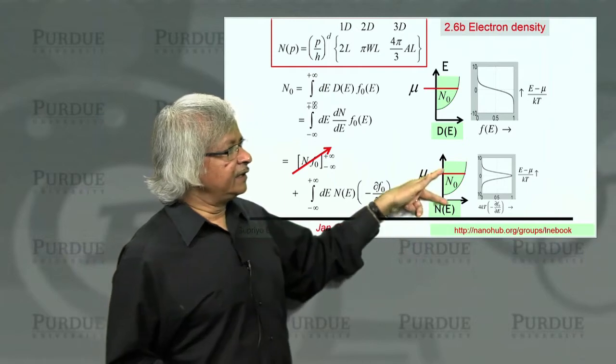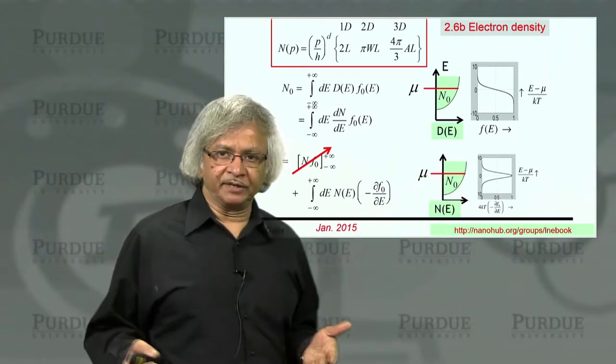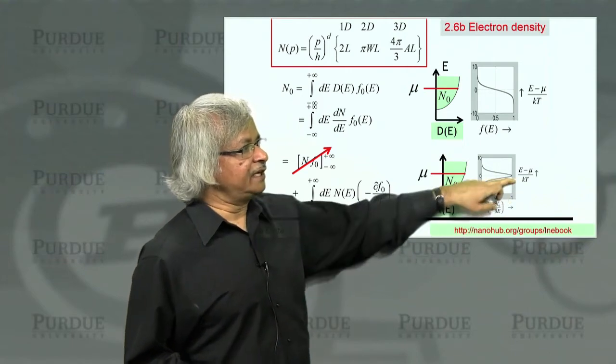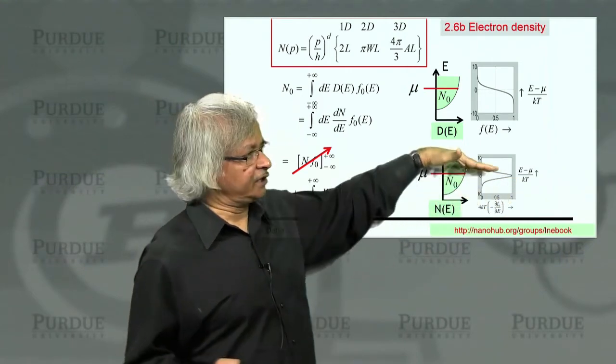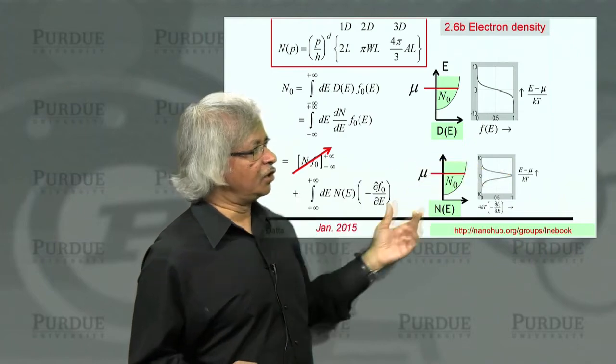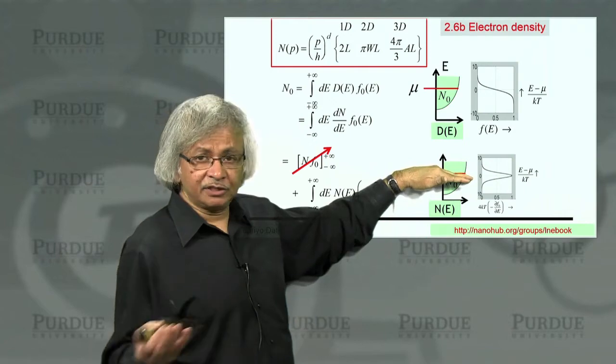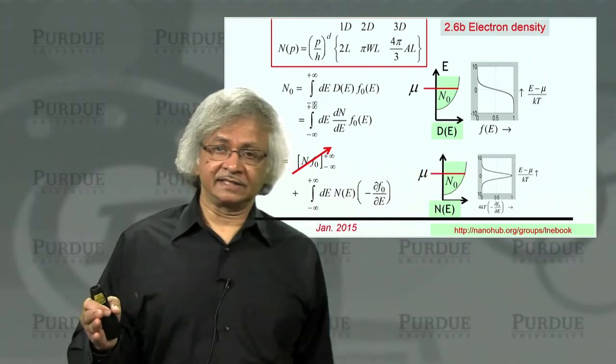And here, the point is that when you go to very low temperatures, then of course this dF dE kind of becomes like a delta function right at that energy. And so when you integrate, you basically get the value of N at that energy, which is what we talked about in the last slide. That at zero temperature, the electron density is simply given by the value of N of E at mu.